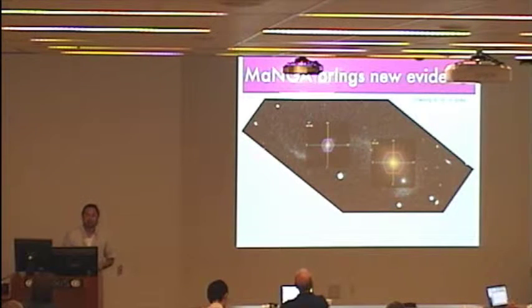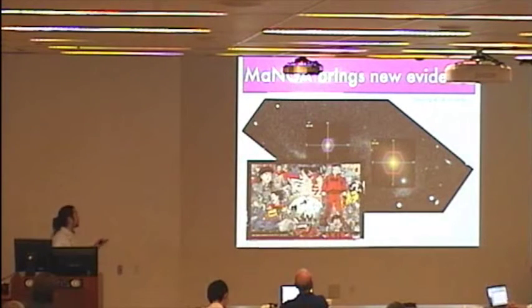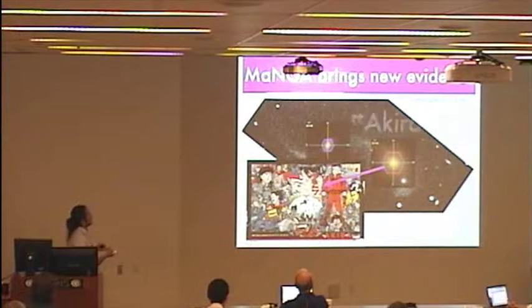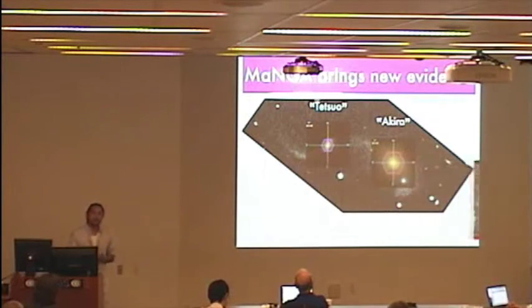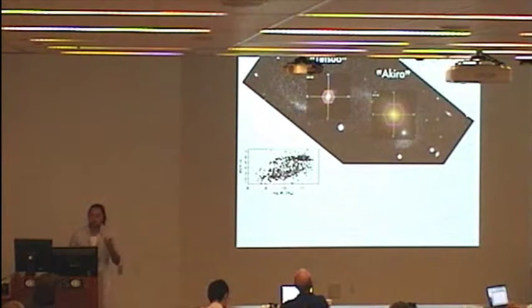we decided to name our galaxies after famous manga characters. And for this system, we decided to go with the comic Akira. And we went with calling the red elliptical galaxy Akira, and the blue spiral galaxy Tetsuo.